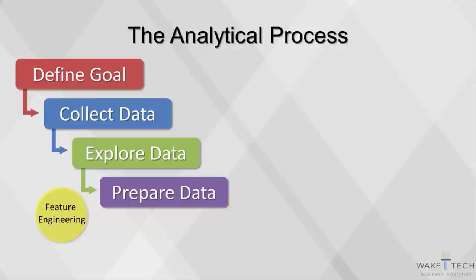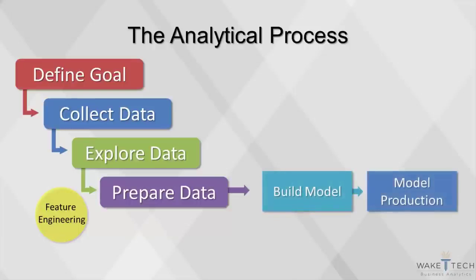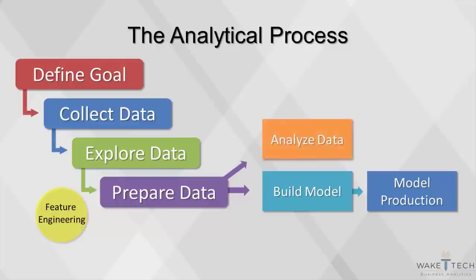The last two steps in the analytical process are to build models and then to put these models into production. A model is a type of mathematical equation that describes relationships among variables in a data set, often for the purpose of predicting an outcome. By putting a model in production, an automated decision can be made when new data is observed. In some cases, models are not the goal of a project — rather, the goal is to analyze data and communicate the findings in an analytical report, presentation, or dashboard.